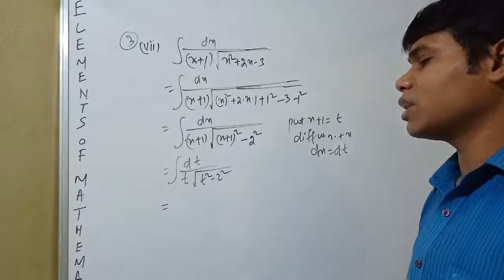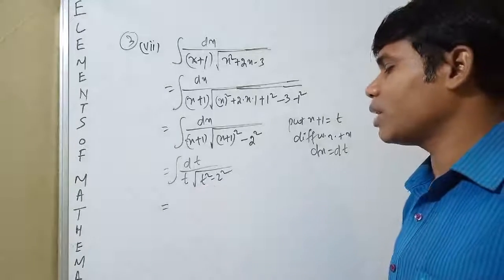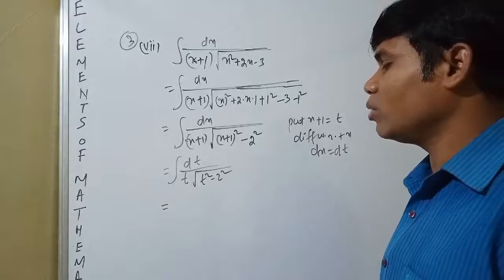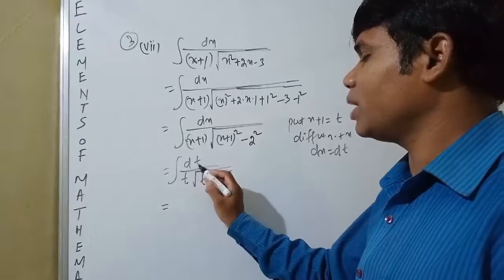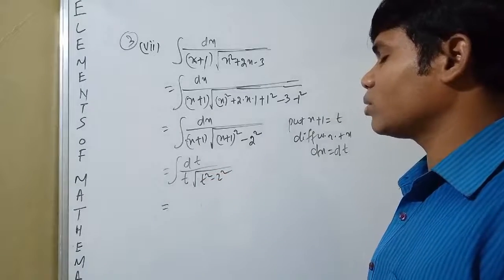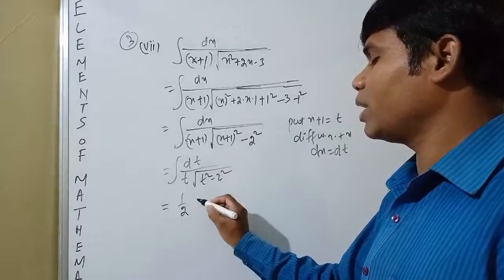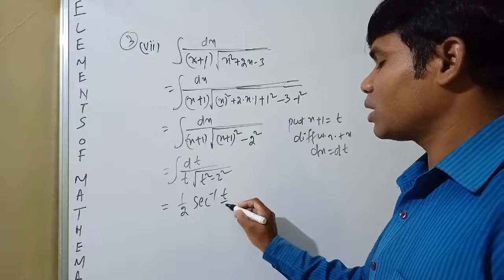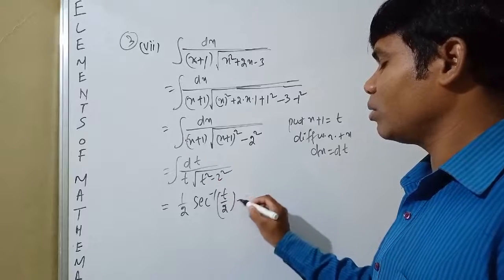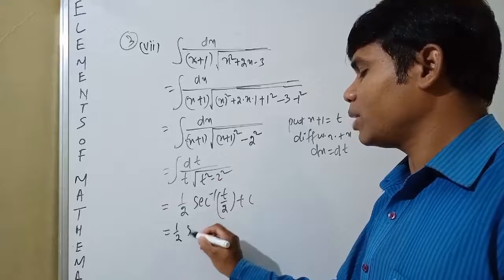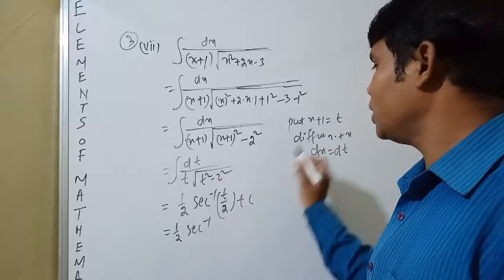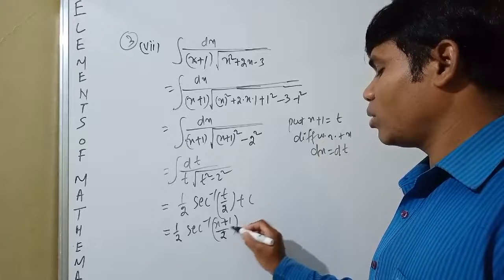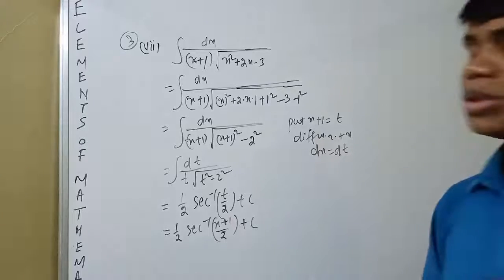Using the standard formula: integration of dx divided by x times root over (x²-a²) equals (1/a) sec inverse (x/a). Here a equals 2. So this becomes (1/2) sec inverse (t/2) plus c. Substituting back, t equals x+1, the answer is (1/2) sec inverse ((x+1)/2) plus c. Pause the video and note it down.